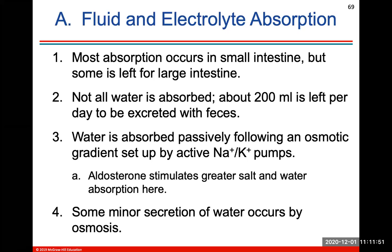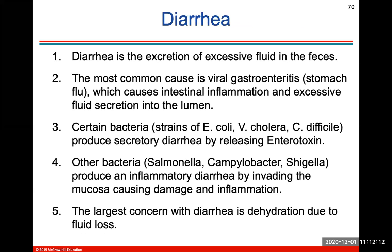Most absorption occurs in the small intestine, but some is left for the large intestine. Not all water is absorbed — about 200 milliliters is left per day to be excreted with feces. Water is absorbed passively following a gradient set up by sodium-potassium pumps, and some minor secretion of water occurs by osmosis. Diarrhea is the excretion of excessive fluid, usually due to a virus. Certain bacteria produce secretory diarrhea by releasing enterotoxin, while other bacteria produce inflammatory diarrhea by invading the mucosa. The largest concern with diarrhea is dehydration.